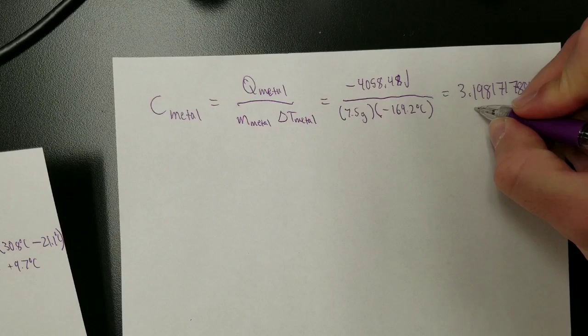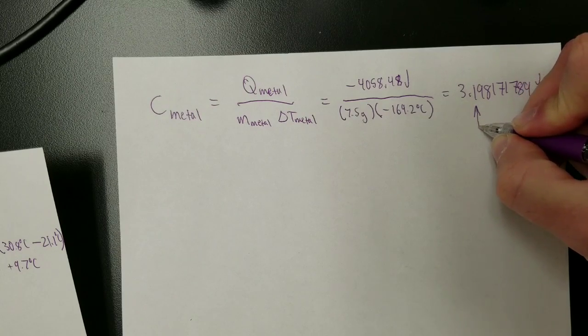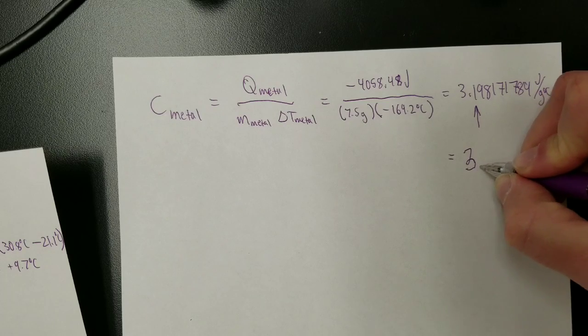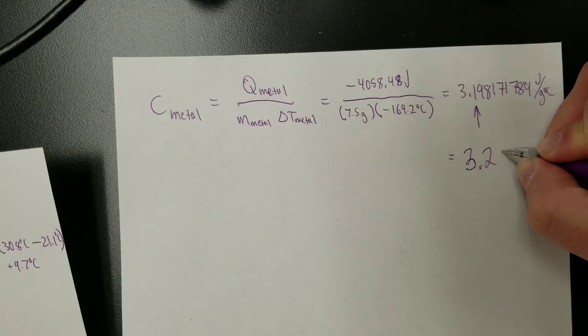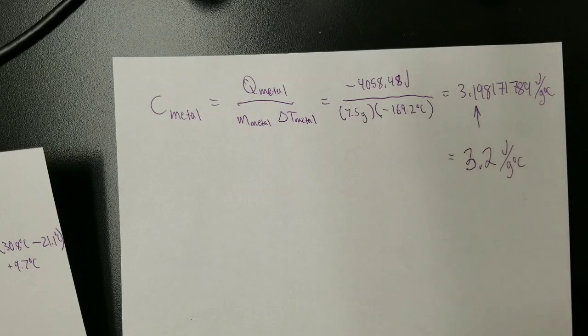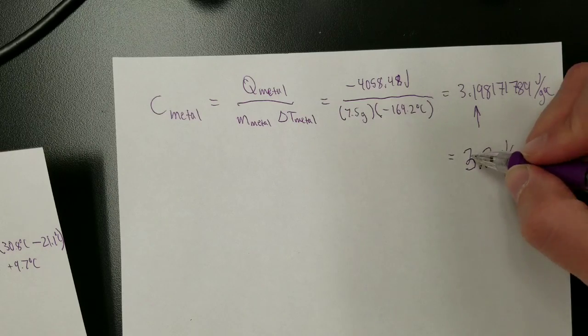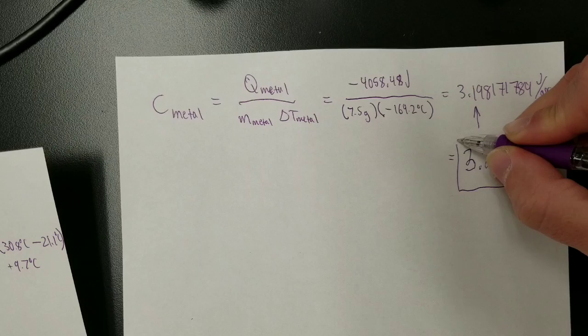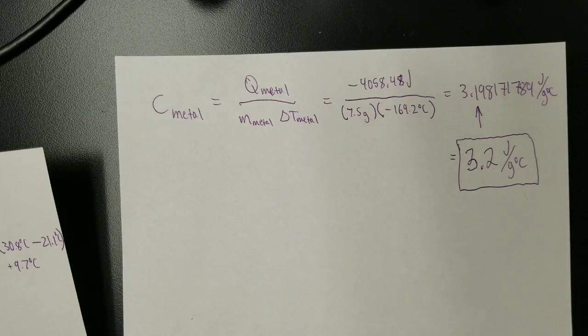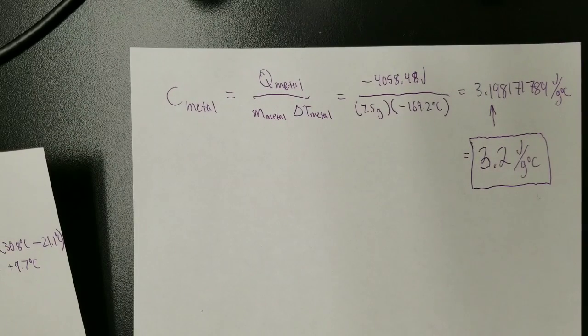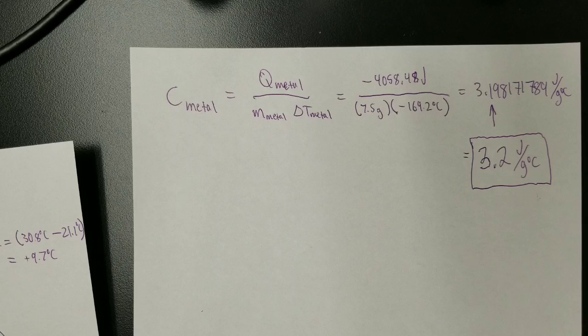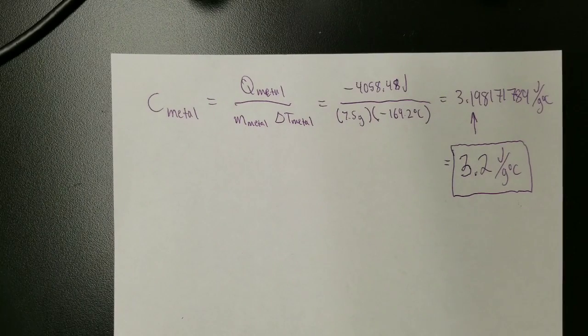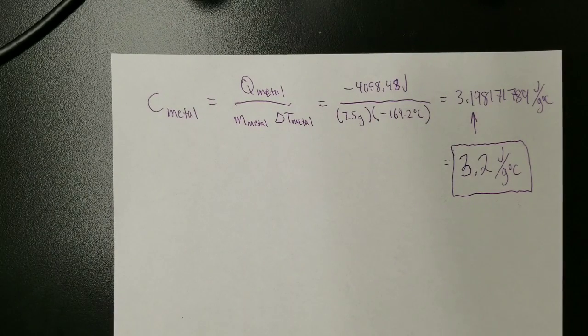So we're going to say the final answer is 3.2 joules per gram degree Celsius, some fictional number I made up, so I don't think any metal actually has this. But regardless it shows you the process of how you calculate it. So there we go, that's the answer to how we go about finding the specific heat value of a mystery metal by heating it up and dropping it into water. There we have it, ladies and gentlemen, happy studies.